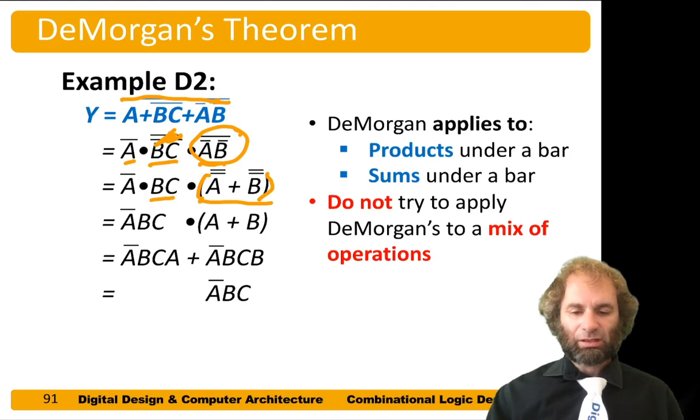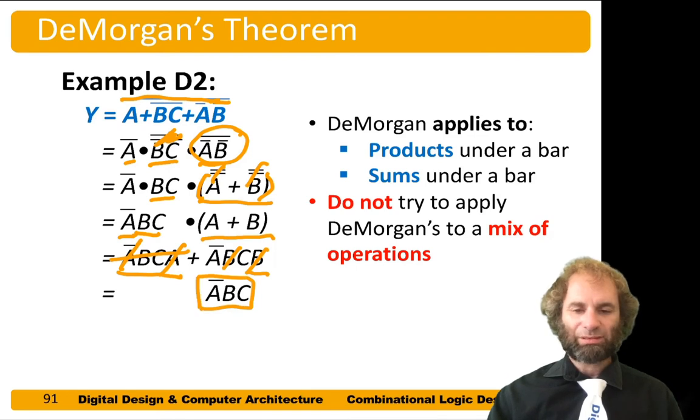Now I can strike those double bars by involution and I'm left with A bar BC and A or B. I could apply the distributive property and bring out the A, bring out the B. A bar and A is just zero, so this term goes away. B and B is just B, so I'm left with A bar BC.